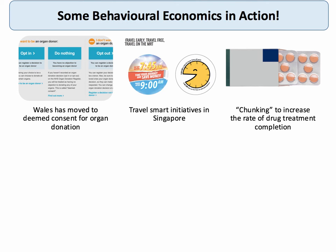In Singapore, to reduce travel volumes at congested peak times, the government brought in a number of smart incentives. For example, you can travel free at early times of the day if you avoid peak times. Or if you travel off-peak, your card is entered into a lottery where you can win $1, $10, or $100 — with a monthly lucky draw prize of $1,500. Peak-time usage of the MRT system is down 7.5% since these initiatives were introduced.